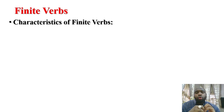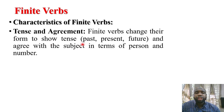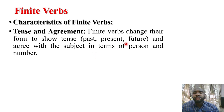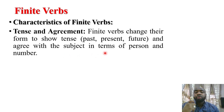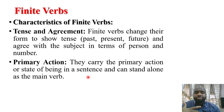Now, the characteristics of a finite verb. Number one: tense and agreement. Finite verbs change their word form to show tense — whether a verb is present tense, past tense, or future tense — and that verb must agree with the subject in terms of person and number. Number two: primary action. Finite verbs carry the primary action or state of being in a sentence and can stand alone as the main verb.